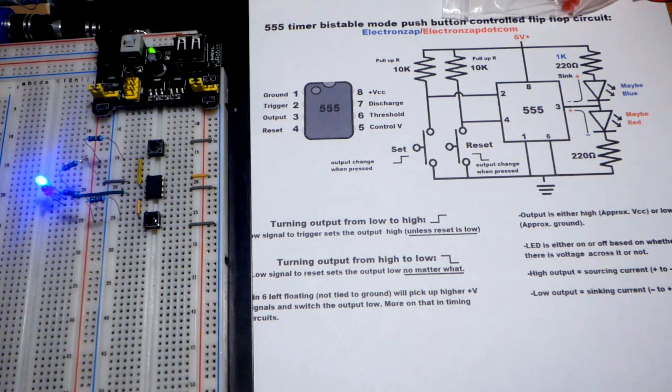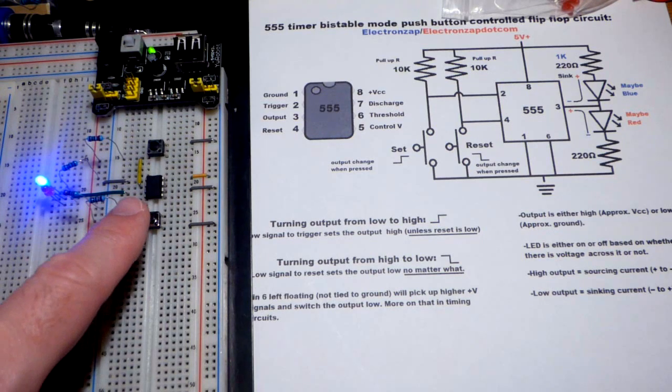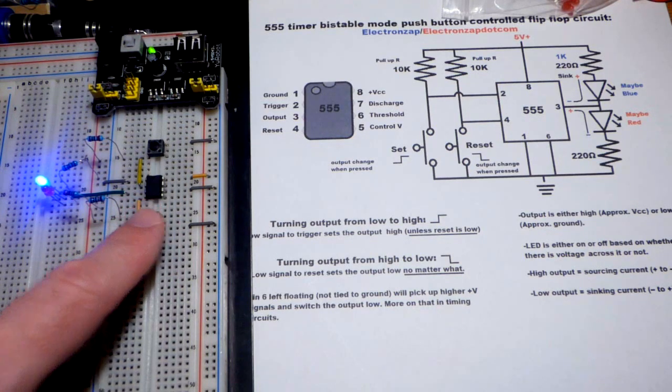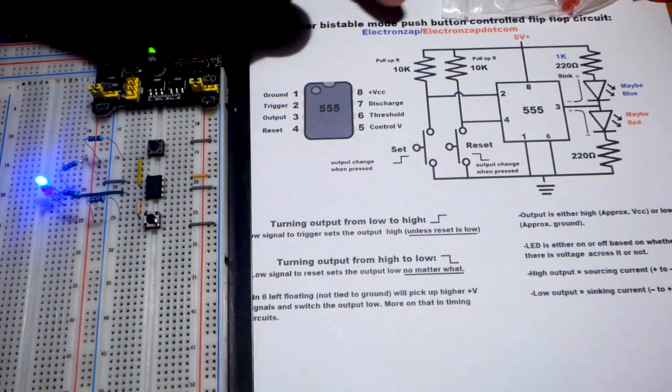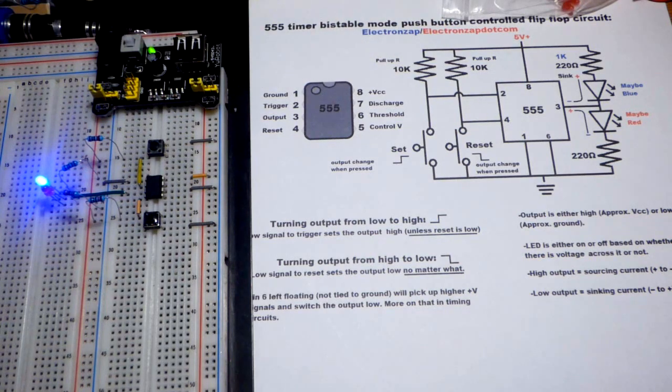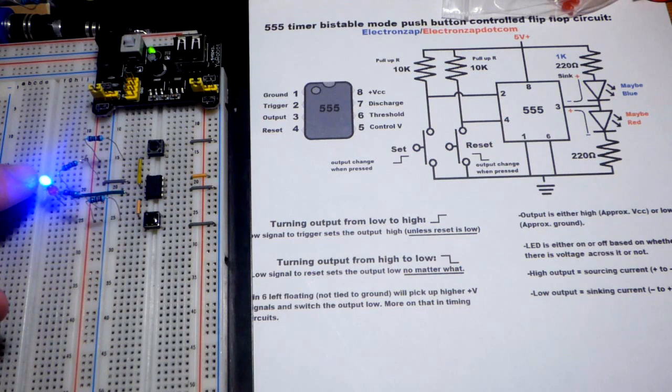So this is the 555 timer, the integrated circuit there. It is wired in bistable mode, or you could call it a flip-flop. It's bistable because it's stable in two positions. You can see this LED is on right now, and I wired it so that the blue LED would be lit when the output is low, so it's zero volts.